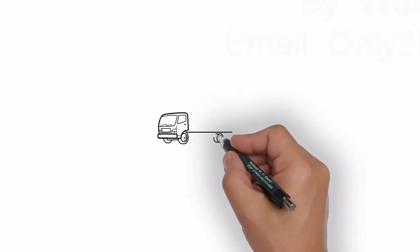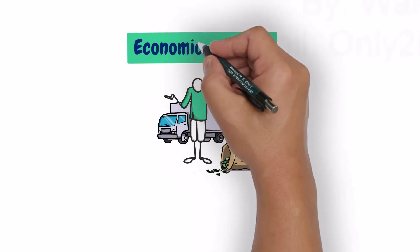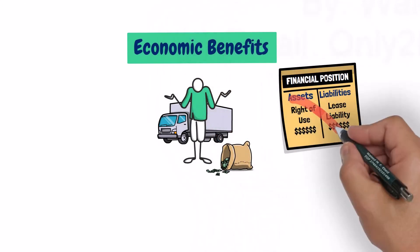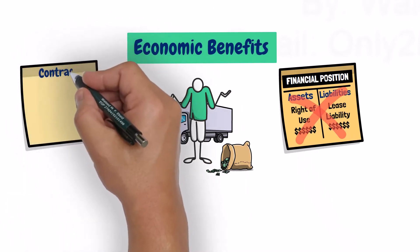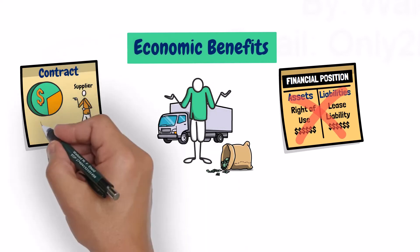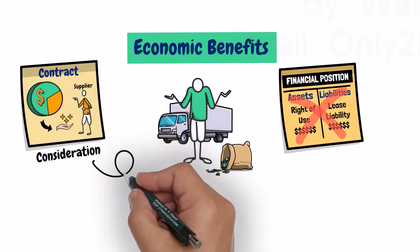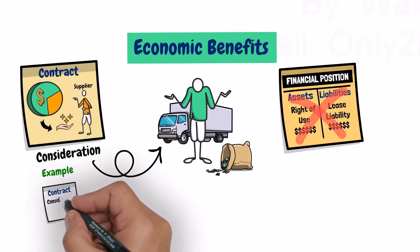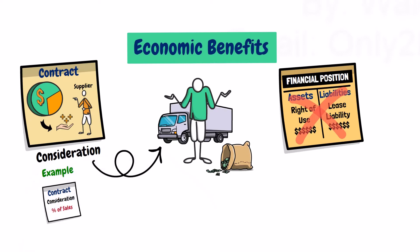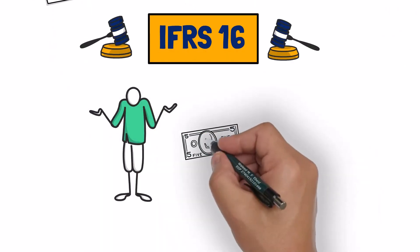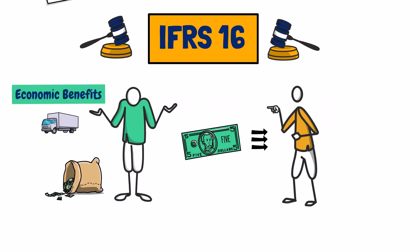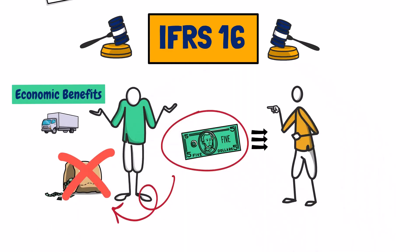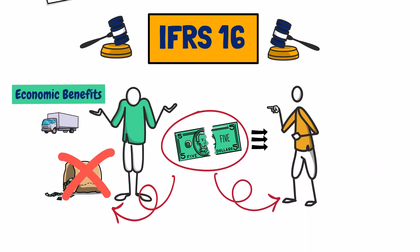The last thing to note is that some customers might try to prove that they are not obtaining substantially all the economic benefits from the asset use, in an attempt to avoid lease accounting. They might show that they are required by the terms of the contract to pay part of the economic benefits generated from the asset use as consideration to the supplier — for example, a requirement that the customer pays the supplier a certain percentage of sales generated during the period of use. The standard blocks that attempt by stating that the existence of such payments does not mean that the customer is prevented from having the right to obtain substantially all the economic benefits from the use of the asset, because such payments are part of the economic benefits that the customer generated during its use of the asset in the first place, and then paid part of these benefits to the supplier afterwards.